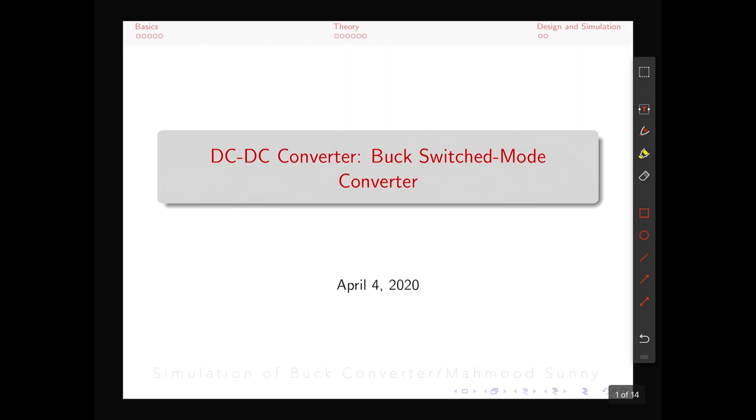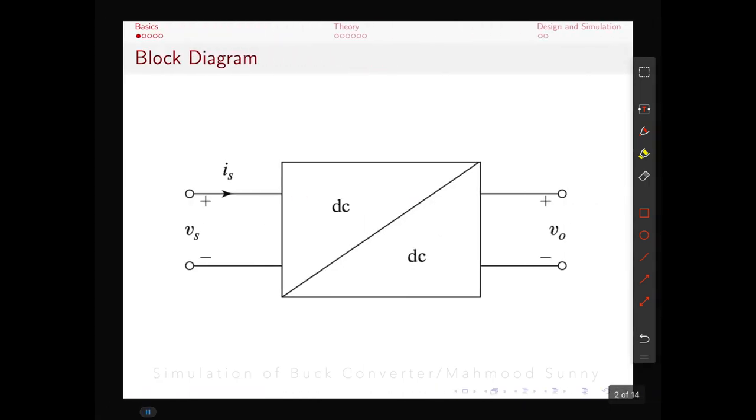In this video we will learn about buck converter and how to simulate a buck converter. Buck converter is one type of DC to DC converter. DC to DC converter converts DC input voltage into DC output voltage. It can actually step up the input voltage or step down the input voltage.